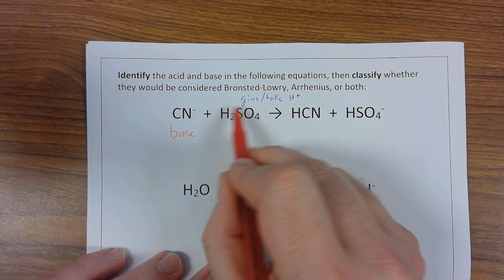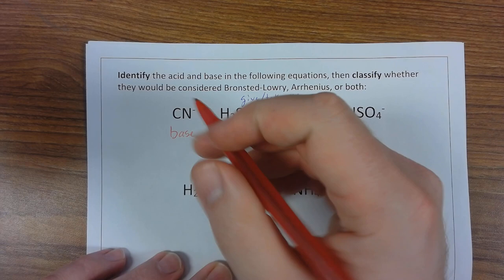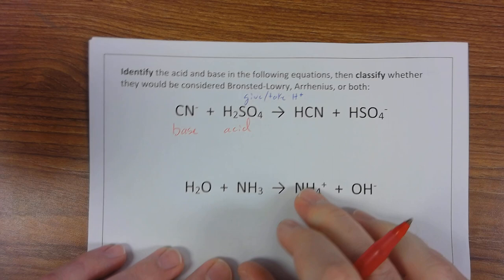Now things that give hydrogens are considered to be acids. So we know that this guy right here gave hydrogens because he came in with two of them but left with only one. Since he gave hydrogen, he is an acid.